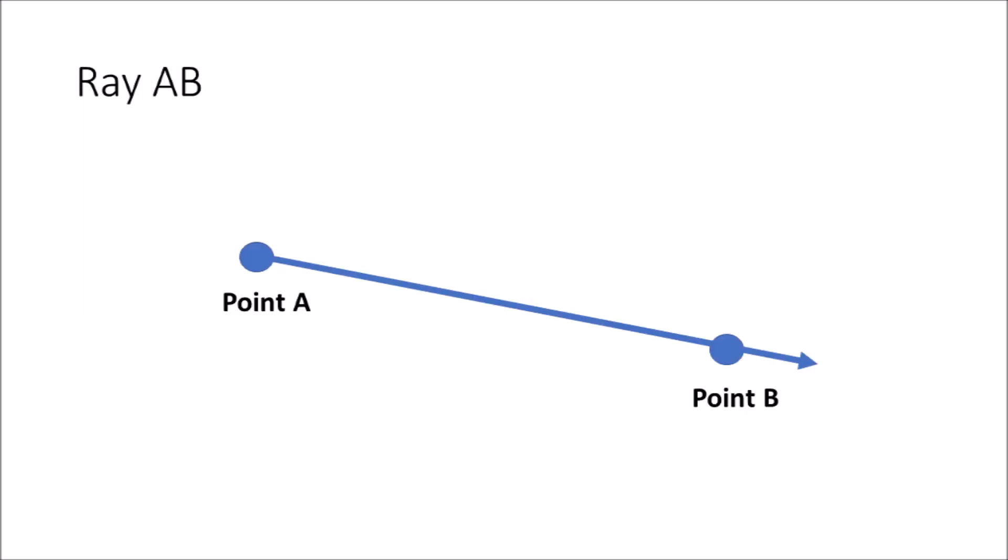Ray AB goes from point A to the direction of point B forever. Think of a sun ray. A sun ray starts at the sun and shoots out forever.